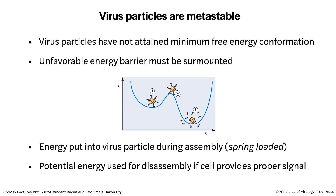Virus particles have not attained a minimum free energy conformation — they exist in a high energy state. To get to the minimum free energy, they have to surmount an unfavorable energy barrier. On a graph of free energy G, virus particles exist in state one (higher energy); to release the genome they must reach state three (minimum free energy), going over an even higher energy barrier. They do this because they're spring-loaded during assembly — energy is built into the bonds, and that energy is used for disassembly when the particle gets the right signal.